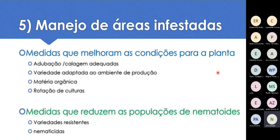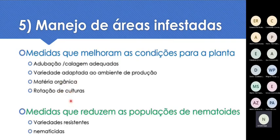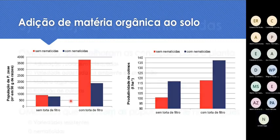Como fazemos o manejo de áreas infestadas? Adotamos medidas que melhoram as condições para a planta — adubação, calagem bem feita, variedade adaptada ao meio de produção, matéria orgânica, rotação de culturas — e medidas que de fato reduzem as populações, que são variedades resistentes e nematicidas. As medidas de cima ajudam as plantas mas não controlam o nematóide. Variedades resistentes e nematicidas, sim, controlam nematóides. Em relação à matéria orgânica e rotação de culturas, vou frisar um pouquinho mais.